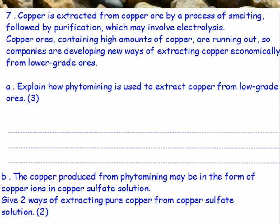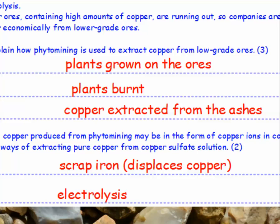Copper is extracted from copper ore by a process of smelting, followed by purification which may involve electrolysis. Copper ores containing high amounts of copper are running out, so companies are developing new ways of extracting copper economically from lower grade ores. Part A: explain how phytomining is used to extract copper from low grade ores — three marks. Part B: give two ways of extracting pure copper from copper sulphate solution.